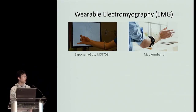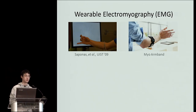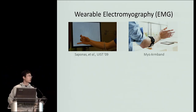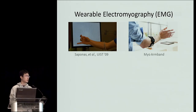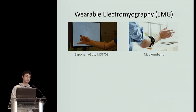Electromyography, or EMG, is a technique for detecting the electrical activities that occurs in one's muscles when one moves or clenches them. Recently, there's been a lot of exciting work on using EMG to build wearable devices that can detect how one moves their arms and hands, allowing one to use their motions to interact with their surrounding devices.